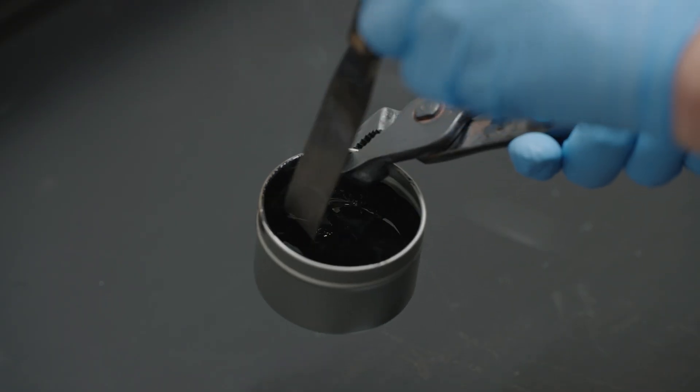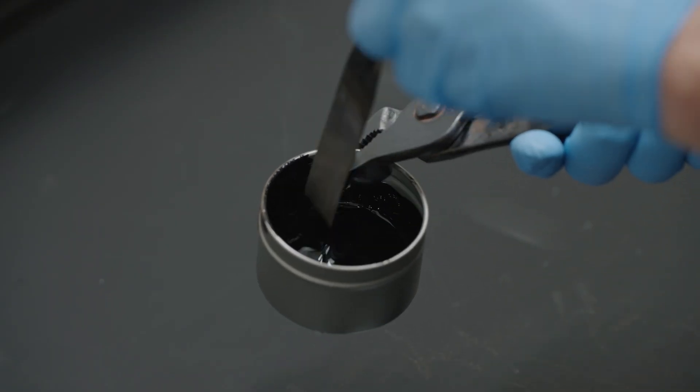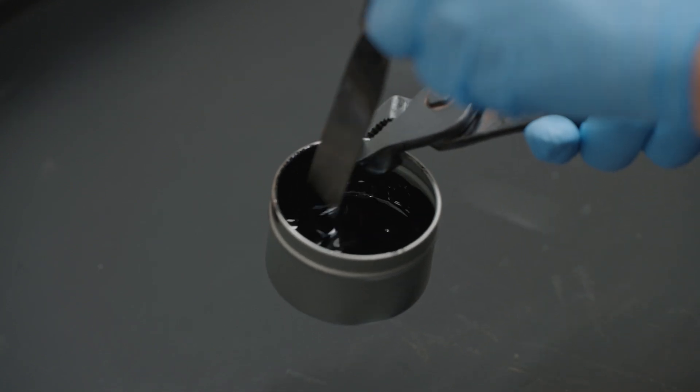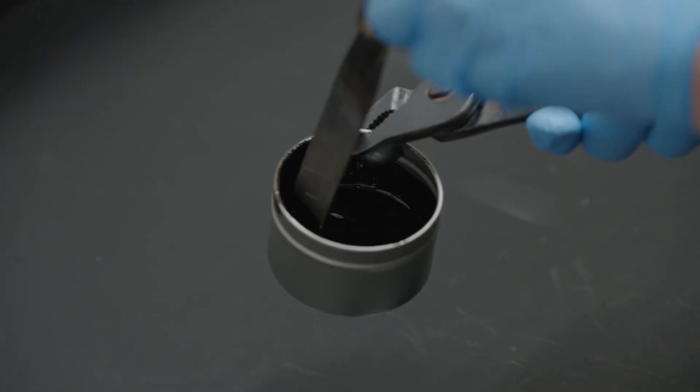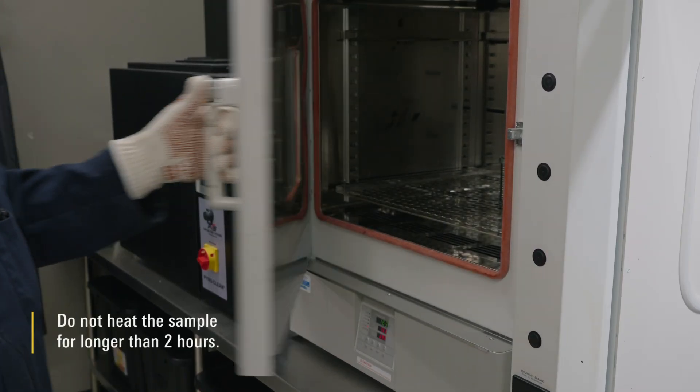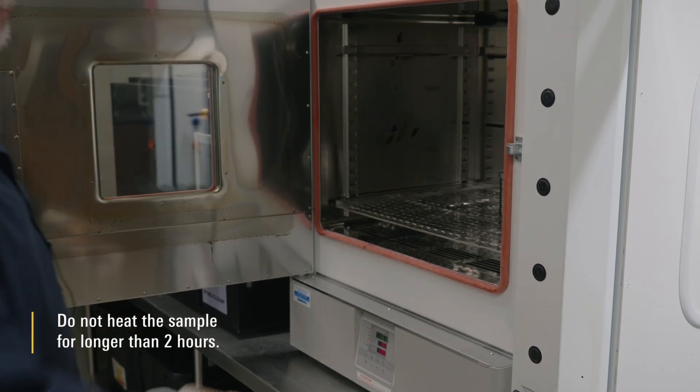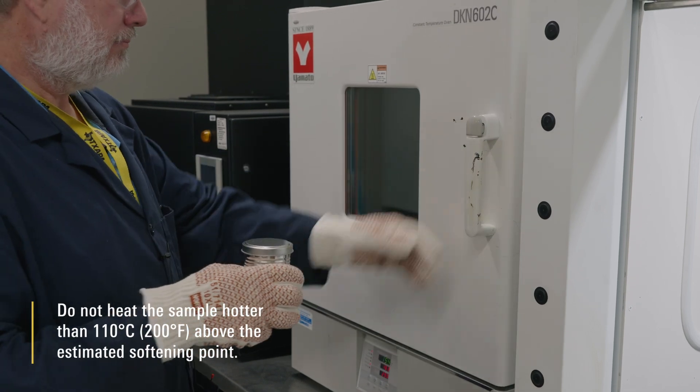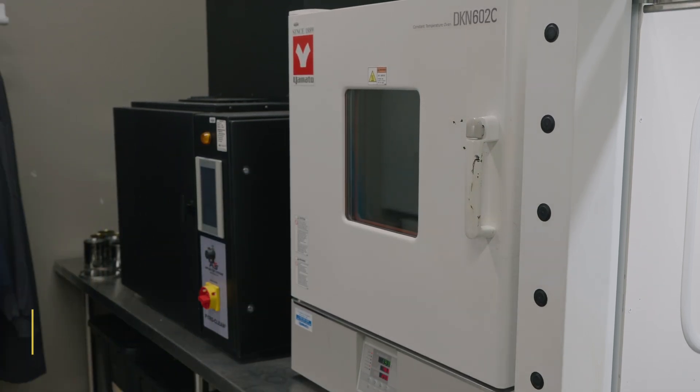Stir frequently while heating sample to prevent local overheating until sufficiently fluid to pour. Do not stir air bubbles into the sample. Do not heat the asphalt sample for longer than 2 hours. Do not heat the sample hotter than 110 degrees C above the estimated softening point.